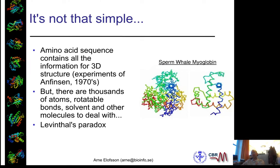However, predicting structure is not simple. Anfinsen showed in the early 1970s, through a study on ribonuclease, that in principle all the information needed to fold a protein is contained in the amino acid sequence. What he did was unfold the protein and show it could fold back. The overall free energy minimum should correspond to the native structure, and that has been proven to be the case for most proteins, perhaps not all of them.